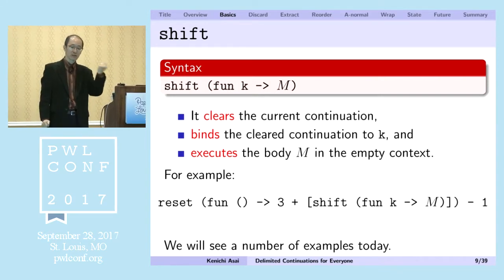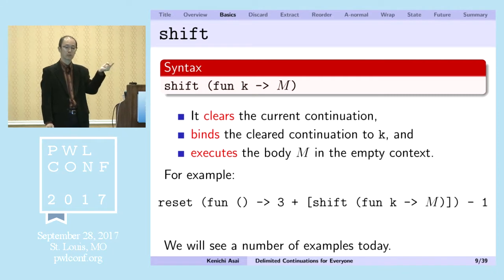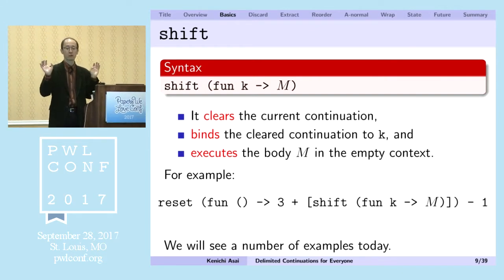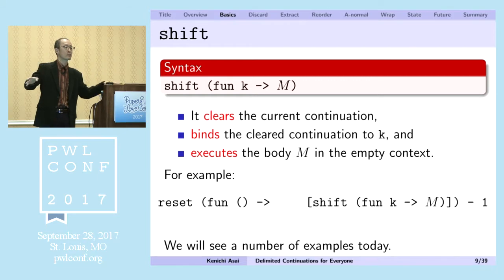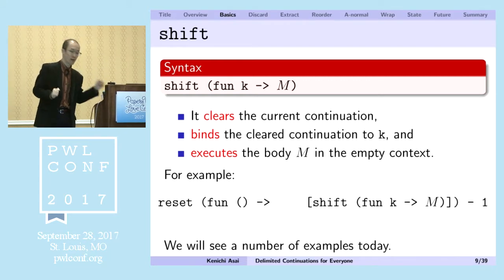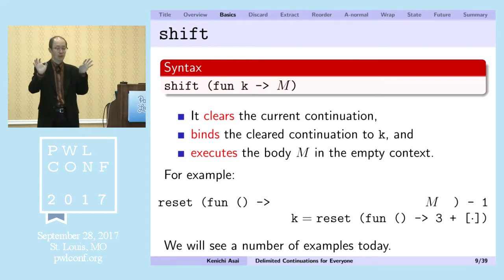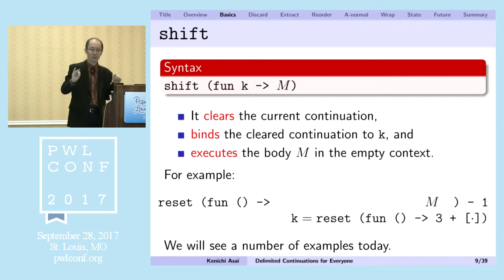To extract continuations, we use the shift operator with syntax 'shift fun k → m'. When this expression is executed, it does three things: it clears the current continuation, binds that cleared continuation to k, and executes the body m in the empty context. For example, shift will clear the current continuation — say 'three plus' — so that goes away and is bound to the variable k, and then the body of the function is executed. So shift: clears, binds, executes.